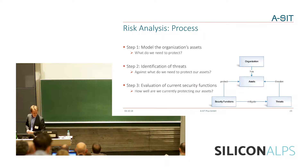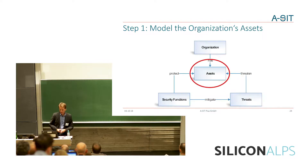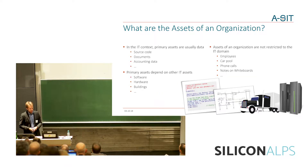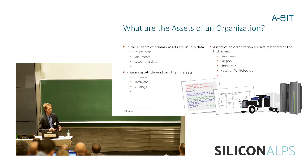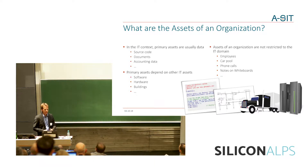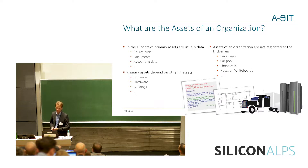The very general method to follow is: we have an organization with a set of assets we need to identify. We have threats that threaten the security of these assets. And we have security functions, security controls, and security measures that mitigate the threats and by doing so protect our assets. This is the fundamental approach to get a systematic overview of our organization. When we start with the first step — modeling the organization's assets — this sounds more easy than it actually is. The first question is: what are the assets of an organization?